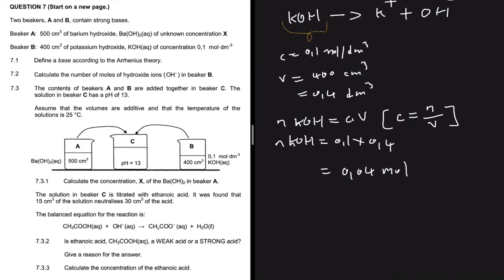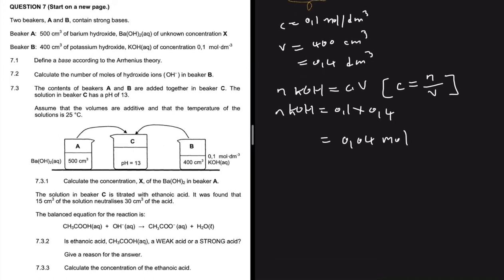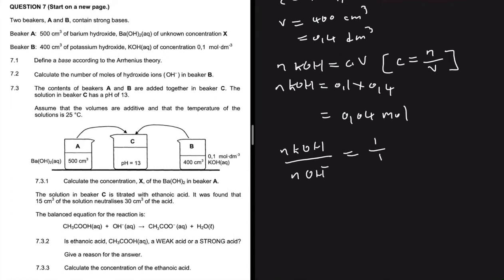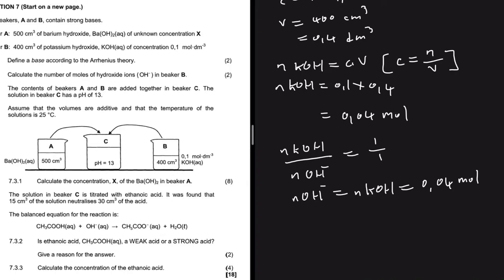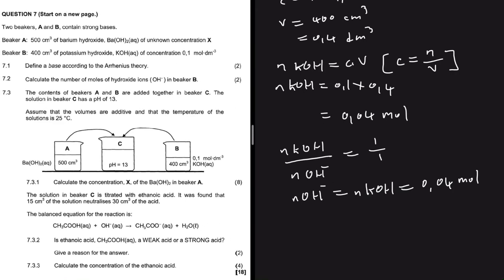We can now use the moles of KOH to find the moles of OH⁻. The ratio of moles of KOH to moles of OH⁻ is 1:1 from the balancing coefficients. So the number of moles of OH⁻ equals the number of moles of KOH, which is 0.04 mol. That completes question 7.2.